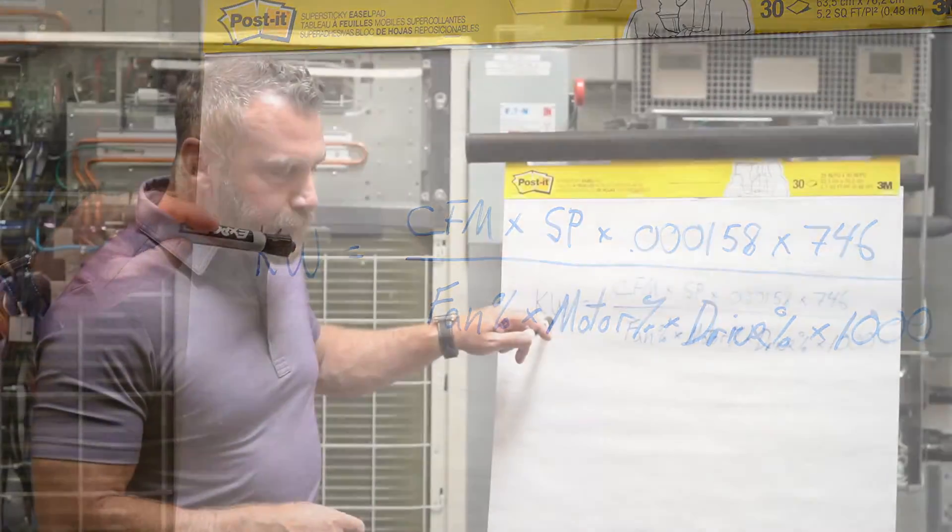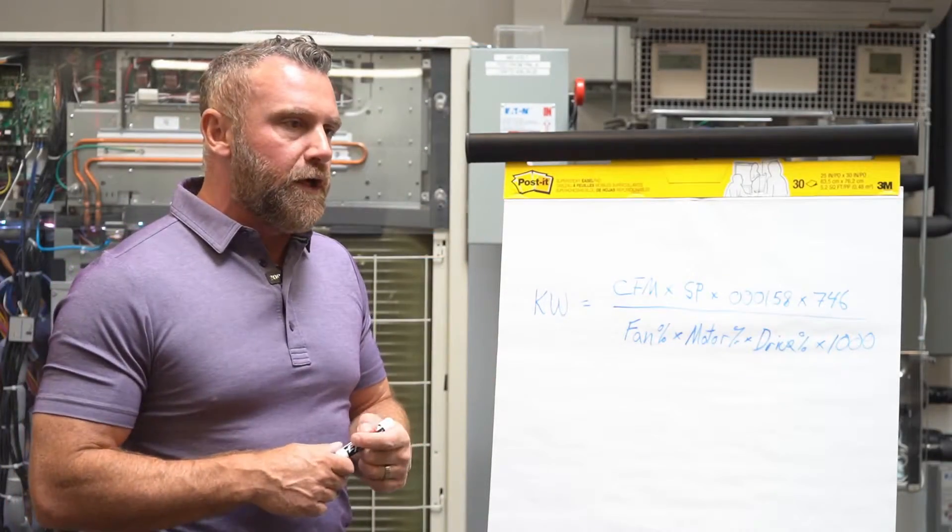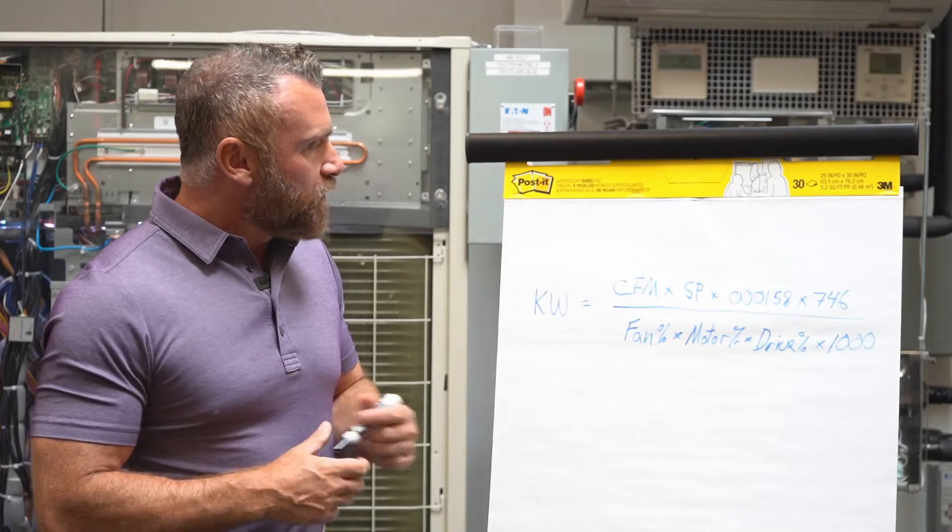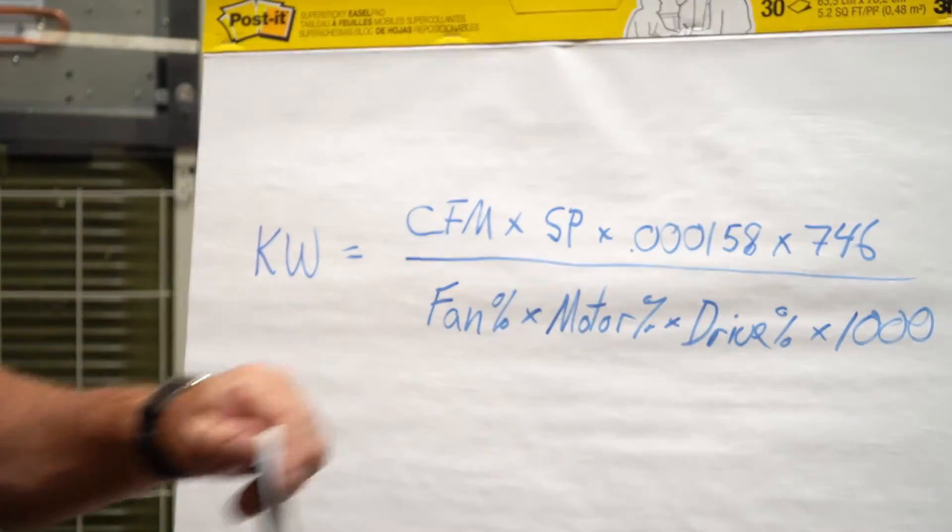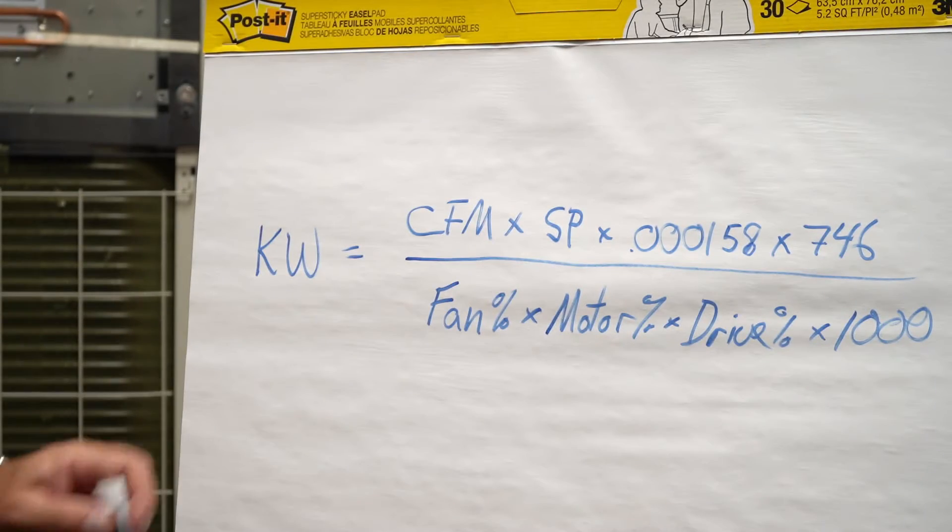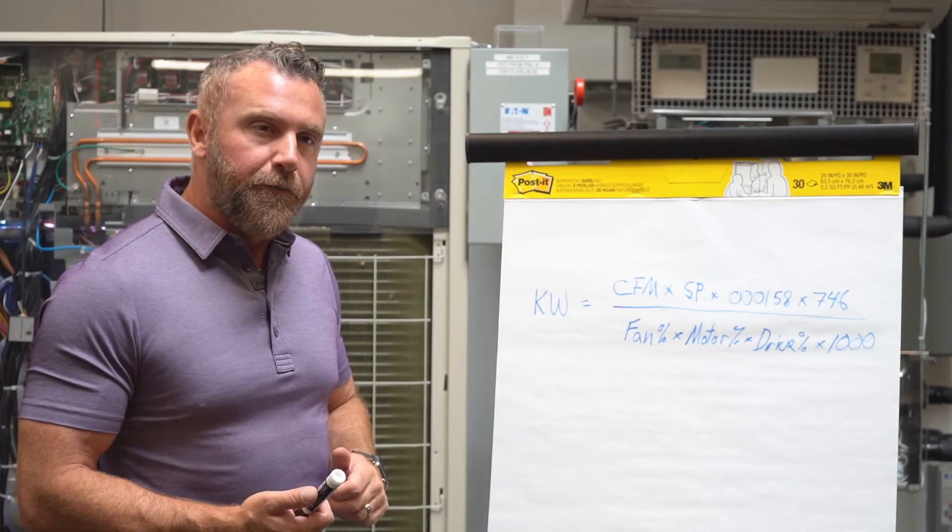So all of that gives us KW, and if we want to give electrical engineer a horsepower, all we have to do is factor out this 746 over 1,000, so it becomes 0.746, divide that by KW, and that gives us horsepower.